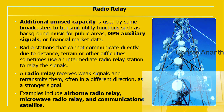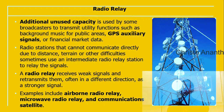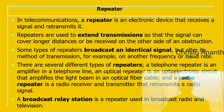Additional unused FM capacity can be used by broadcasters to transmit utility functions like background music, GPS auxiliary signals, or financial market data. Radio stations that cannot communicate directly due to distance or other difficulties use intermediate radio relay stations to relay signals. Radio relay receives weak signals and retransmits them in a different direction as a stronger signal. Examples include airborne radio relay, microwave radio relay, and communication satellites.